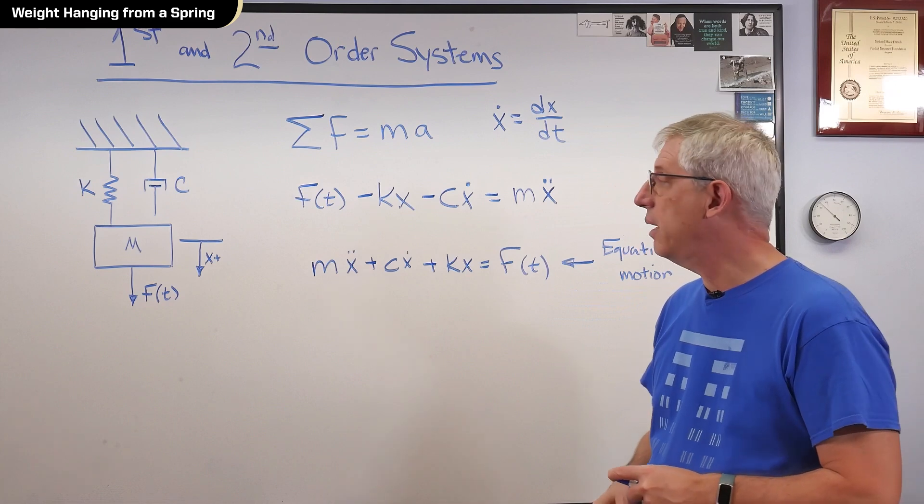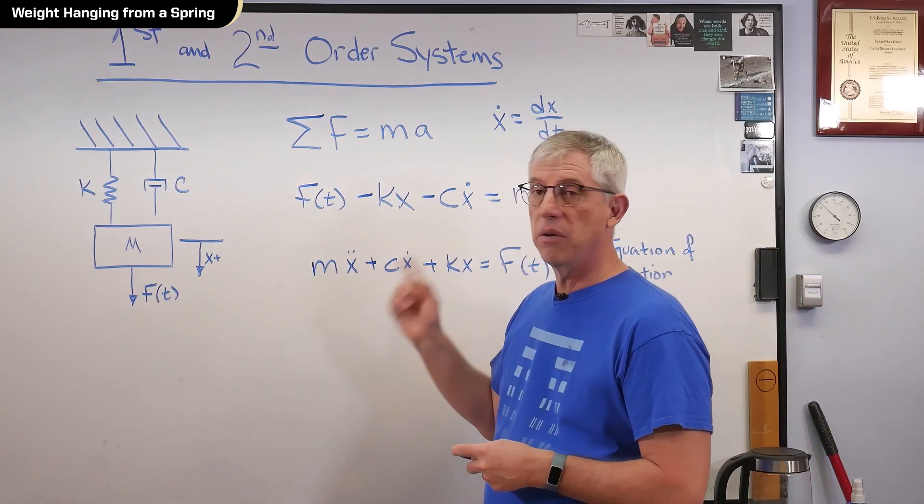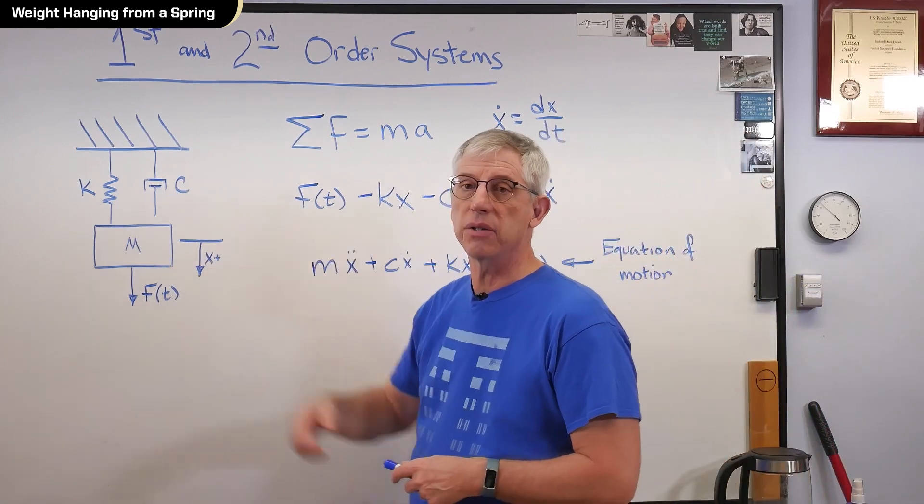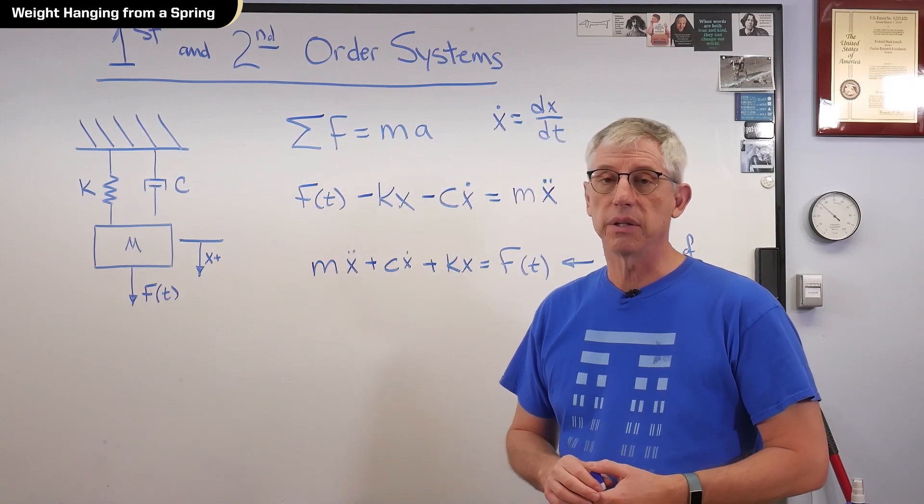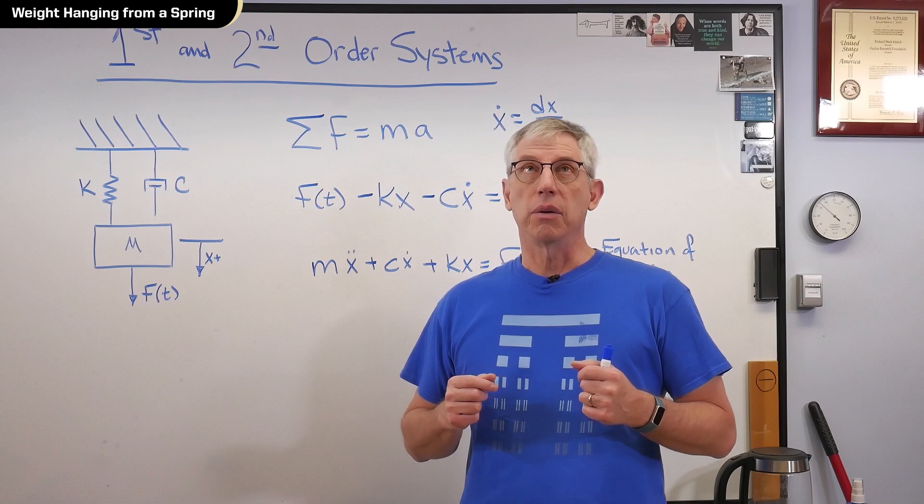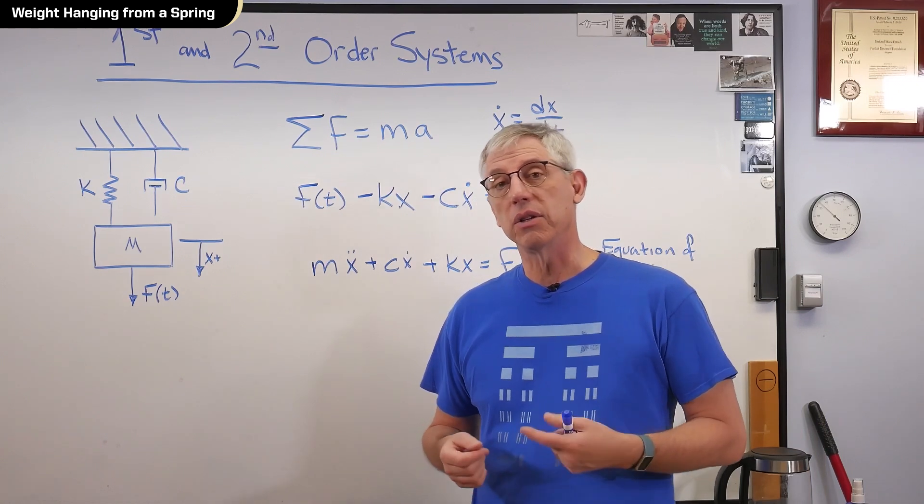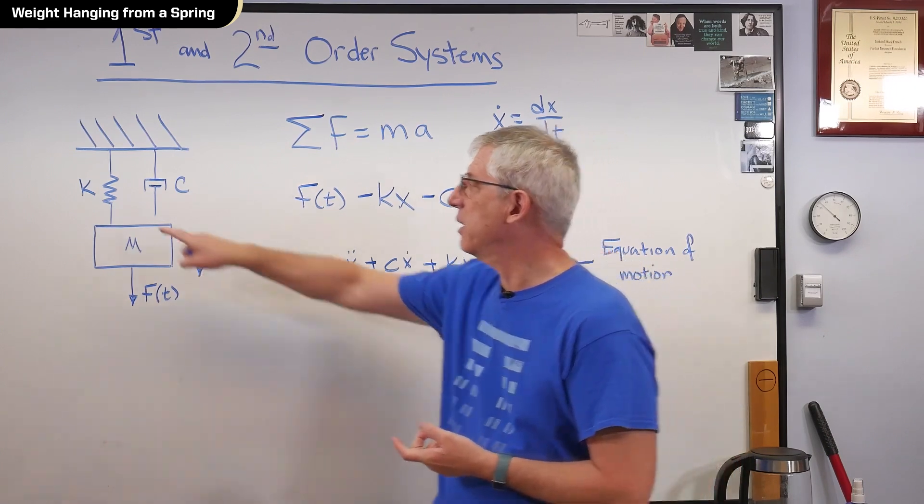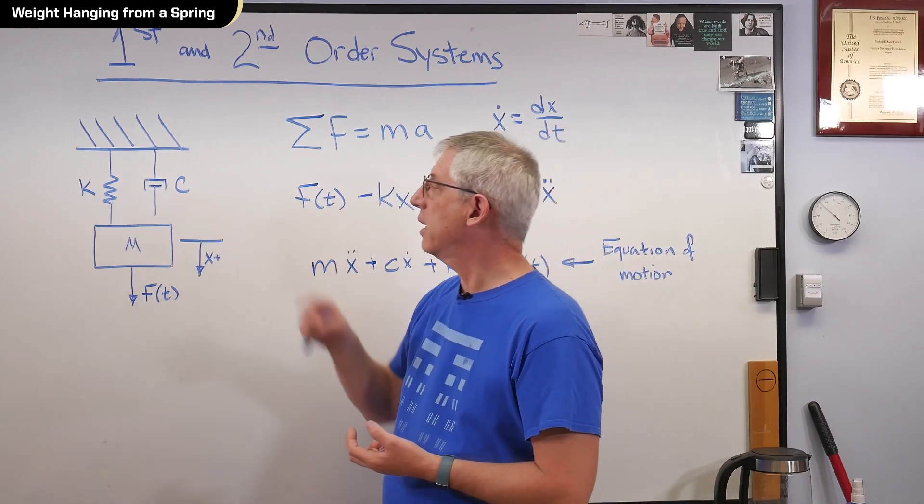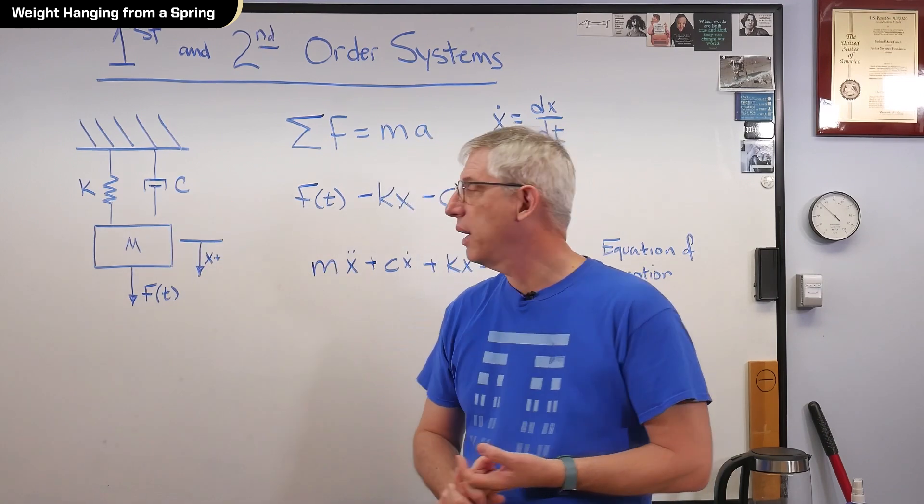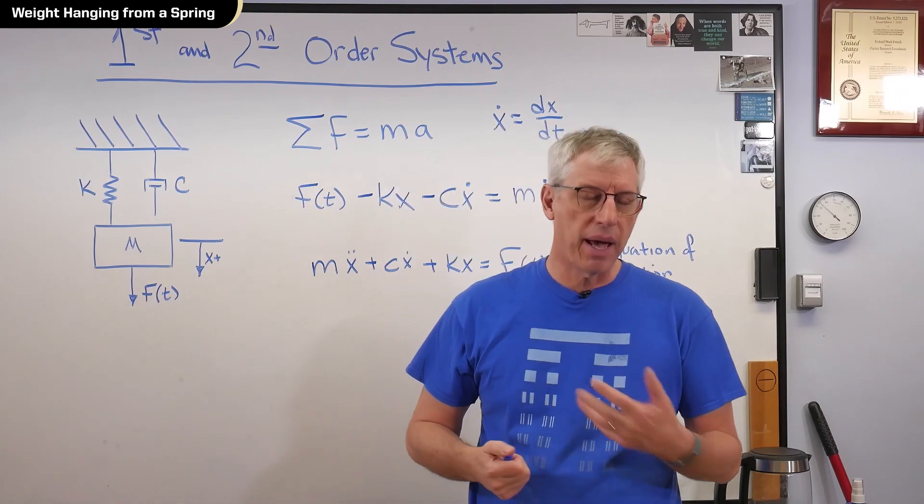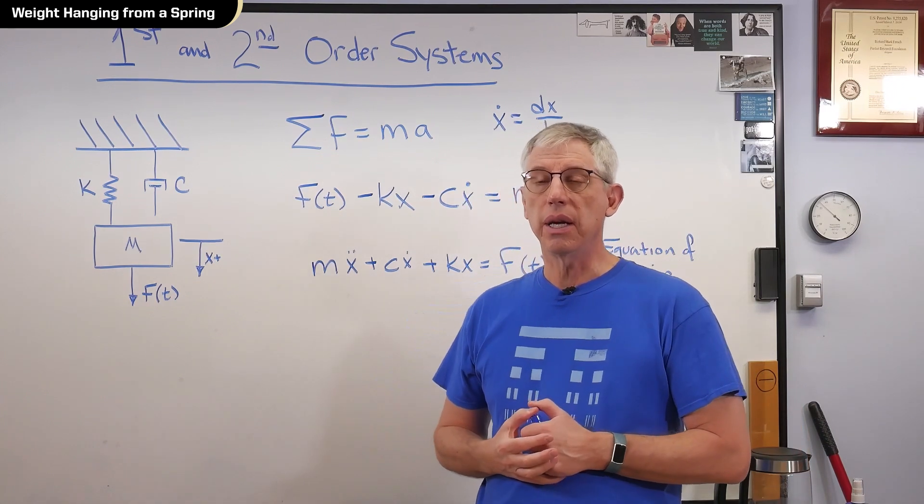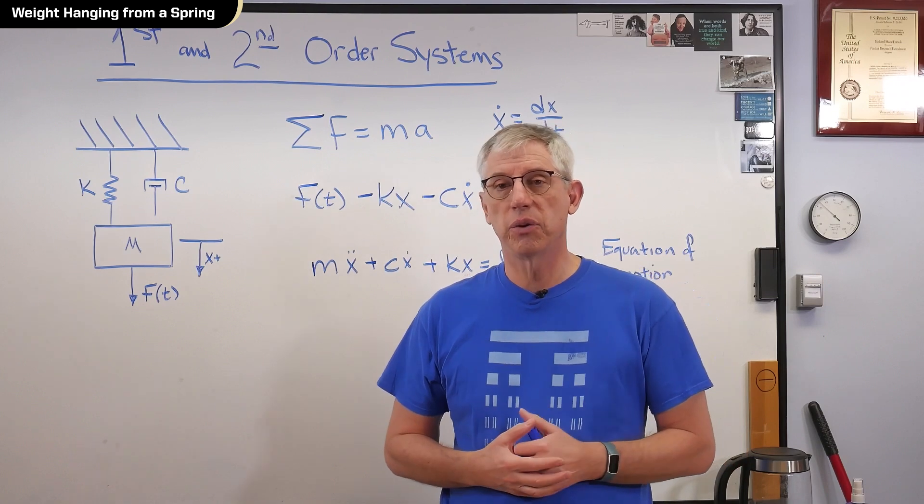Now, I mentioned that many physical systems will give you first and second order governing equations. It doesn't have to be a mass on a spring. Lots of circuits will do this. If you've ever taken a linear circuits class, and you have an RLC circuit, resistance, capacitance, and inductance. Well, a resistor acts like a spring. A capacitor acts like a damper. And the inductor acts like a mass, mathematically. Obviously, it doesn't do it physically. So, as you're analyzing RLC circuits, you're going to get first and second order behavior pretty routinely.